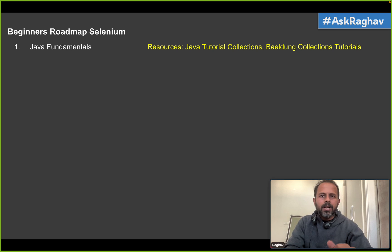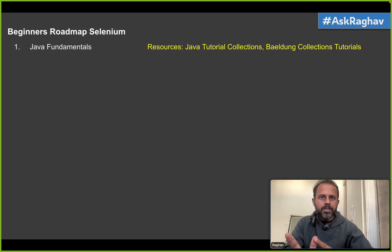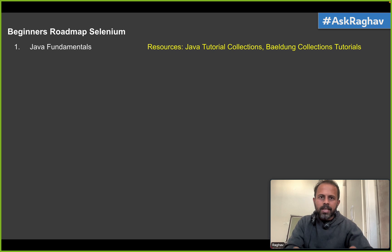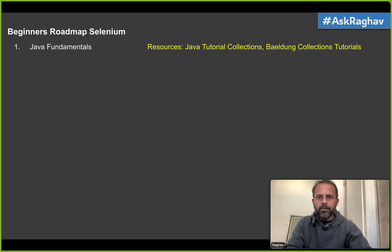It is very easy and we just have to understand and learn the basics. For example, in Java we just have to understand variables, data types, operators, conditional statements, loops, methods, classes, and the very basics of object-oriented programming concepts. You can learn all of this from any free online tutorial within a few days, even with no programming background. We don't need to go very advanced here.